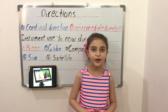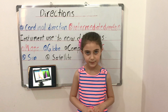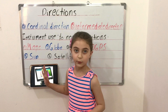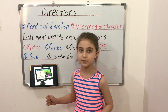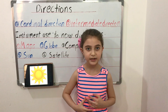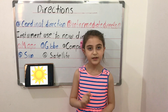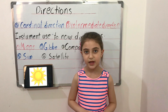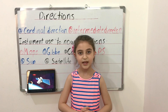What is a GPS? GPS means global positioning system. It shows us where we go, our directions, and the time. Sometimes we use the sun to help us find our way. The sun always rises in the east and sets in the west.